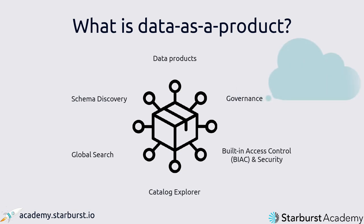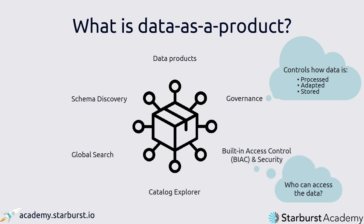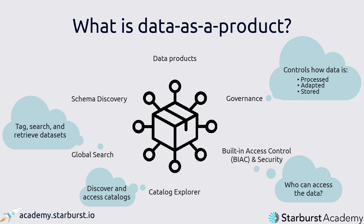For example, governance controls the way in which data is processed, adapted, and stored. Built-in access control and security manages who can access that data and under which conditions. Catalog explorer lets you discover and access different catalogs. Global search allows you to tag data sets and retrieve them using a search function. And schema discovery allows you to search for and access different schemas and then deploy them as needed.